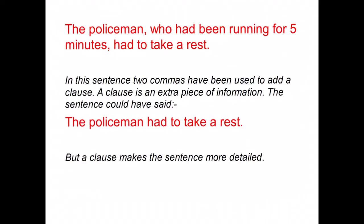Now let's look at using two commas to add a clause — an extra piece of information — to a sentence. For example: 'The policeman, who had been running for five minutes, had to take a rest.' The sentence could simply say 'The policeman had to take a rest,' but the clause 'who had been running for five minutes' makes it more detailed, and we signal it with two commas.